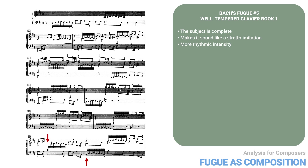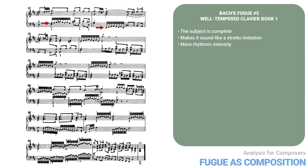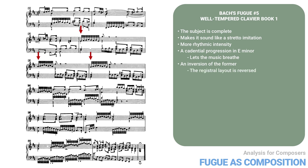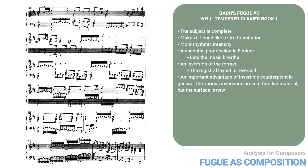This is followed by two more entries in measures twelve and thirteen. Notice the stretto-like effect in measure thirteen. Then in measures fourteen and fifteen there are entries in the tenor and the bass, leading to a cadential progression in E minor in measure sixteen. This lets the music breathe a little. In measures seventeen to nineteen there's a sequence resembling that in measures nine to eleven — in fact it's an inversion of the former — but now the registral layout is reversed. Motive A is on the top and the answering part of the phrase with motive D is in the lower register. This is an important advantage of invertible counterpoint in general: the various inversions present familiar material, but the surface is new.